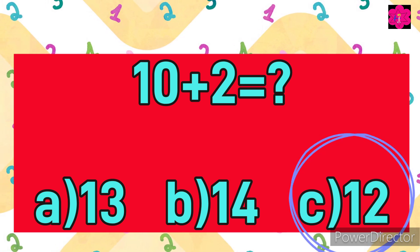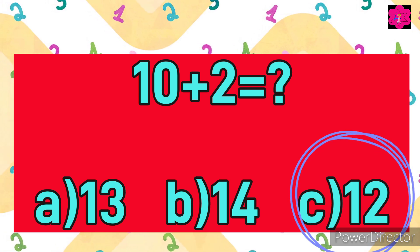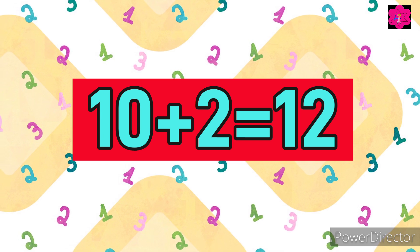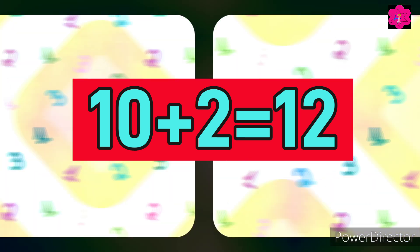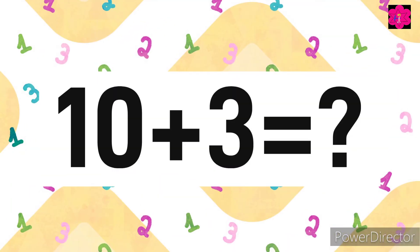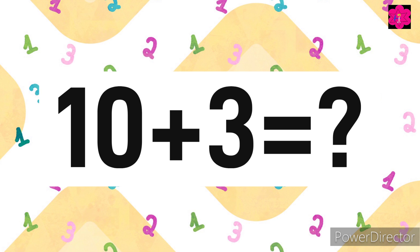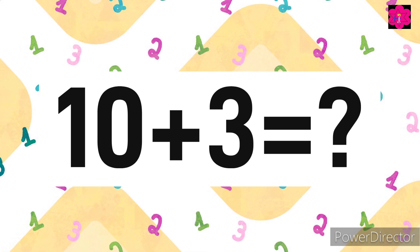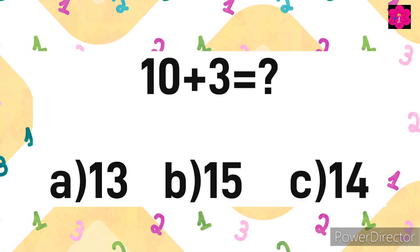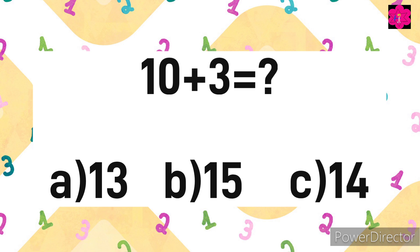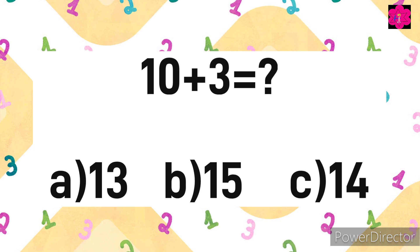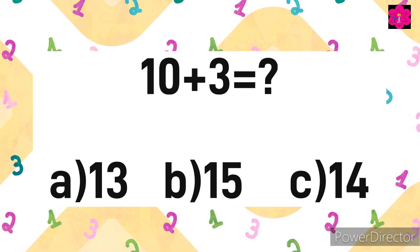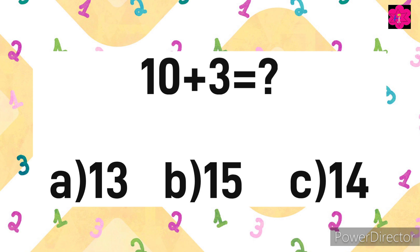Yes, correct answer is C) 12. 10 plus 2 is equal to 12. Next sum is 10 plus 3, and your options are: A) 13, B) 15, and C) 14. Your time starts now.